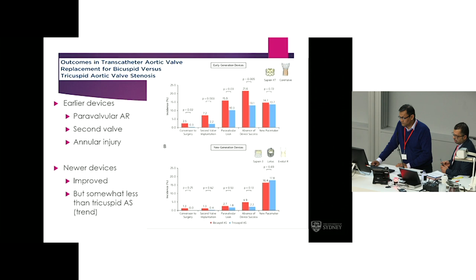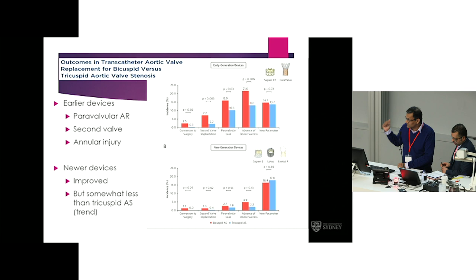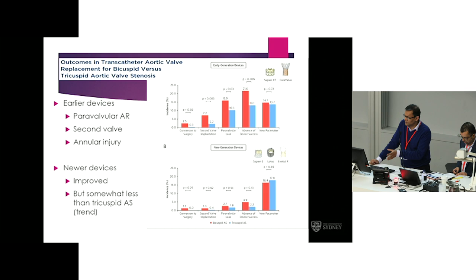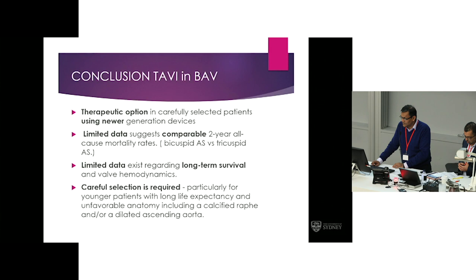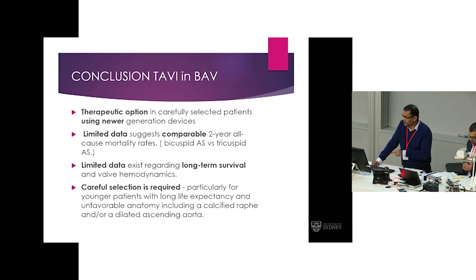I don't want anyone to go away thinking TAVI is a viable long-term option for low-risk bicuspid disease. The data available — including propensity-matched data between tricuspid and bicuspid cases looking at earlier generation devices — showed poor results for all the reasons mentioned, with some improvement in newer generation devices but still not as satisfactory as with tricuspid valves. It is a therapeutic option in carefully selected patients using newer devices, but there is limited data on long-term survival and valve hemodynamics. In younger patients with long life expectancy, it's really not going to be an option.